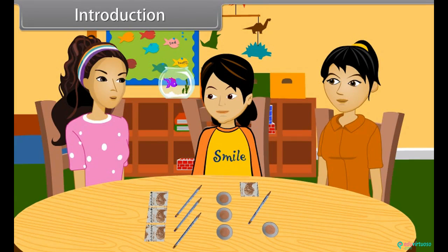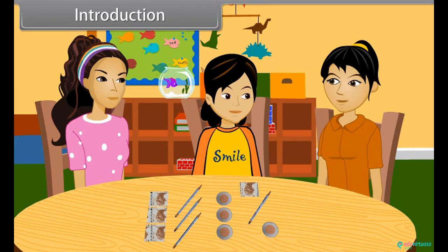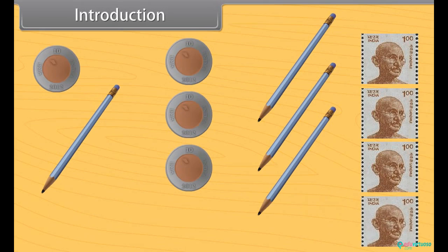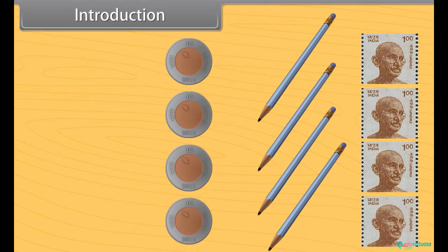Priya, can you tell which of these things belong to which set? Yes, it is so simple. Stamp will go in the set of stamps. Pencil belongs to the set of pencils. And this coin belongs to the set of coins.